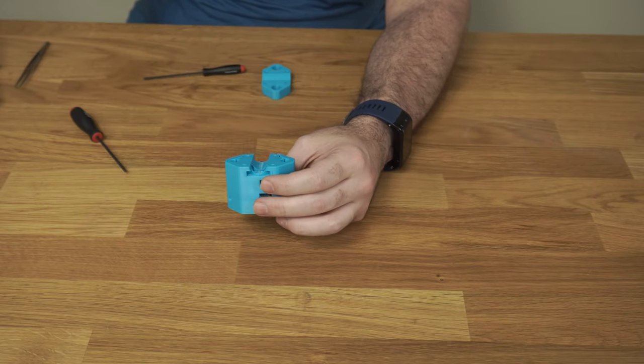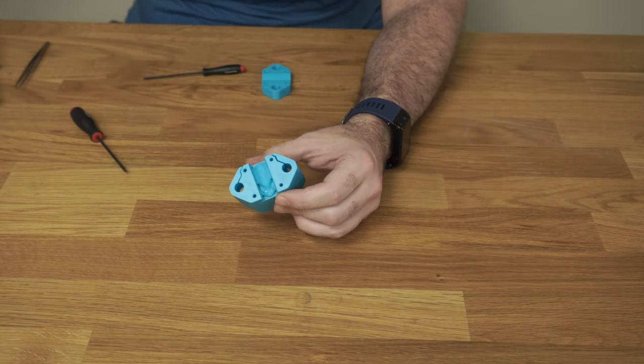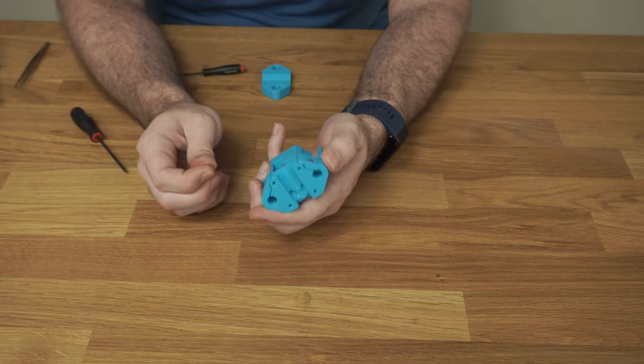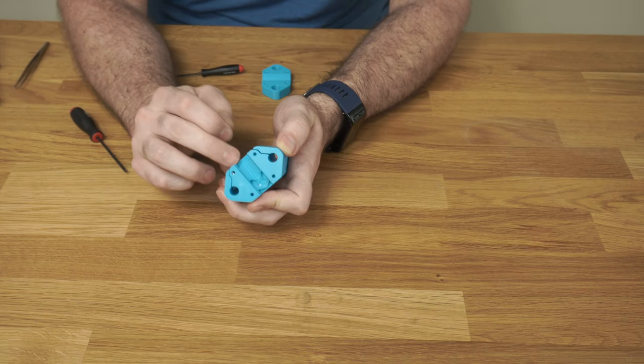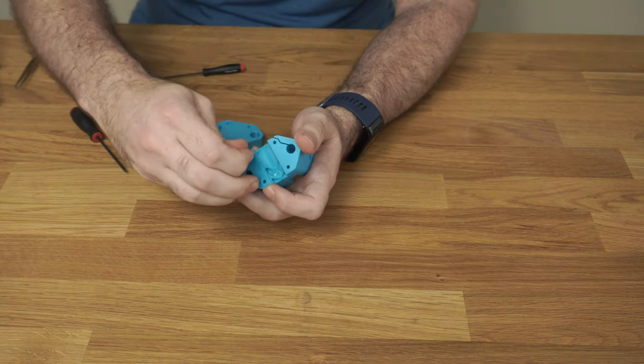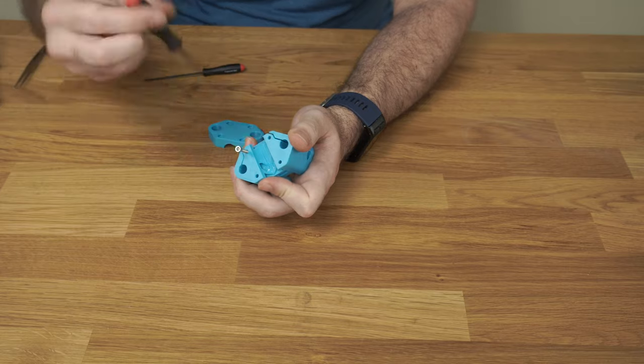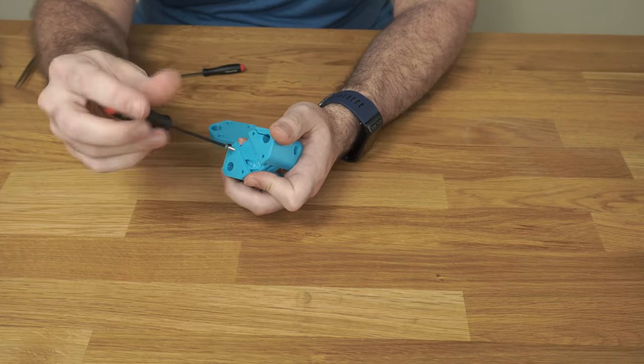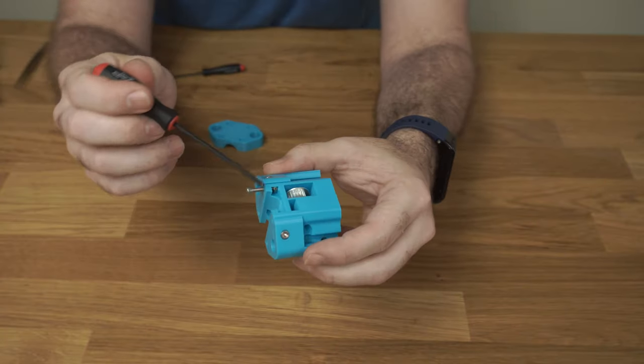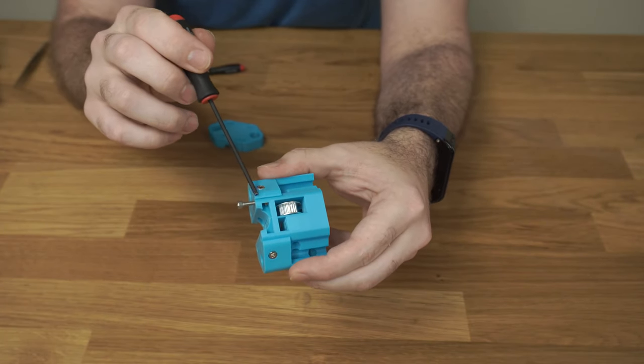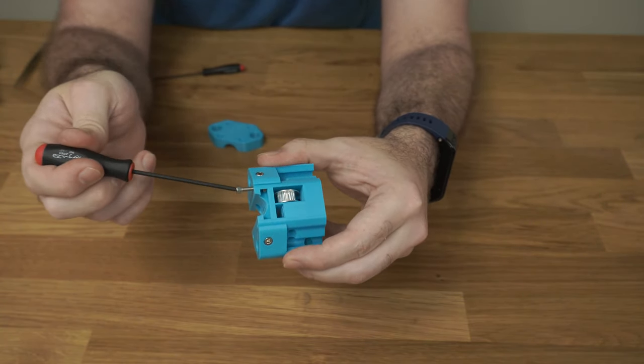Now we just need the captured nuts on the end. I'll show you where these go, but we won't install these until we get them on the printer. They just drop right down there, and you should be able to see the nut in there, and then the bolt will go all the way through.